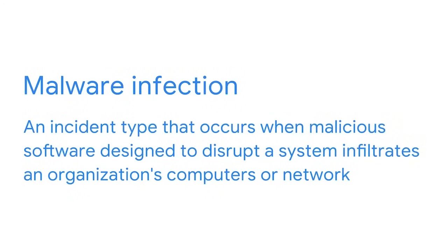Previously, we defined what it means to escalate an incident and discussed the skills needed to properly escalate incidents. In this video, we're going to cover a few incident classification types to be aware of: malware infection, unauthorized access, and improper usage. A malware infection is the incident type that occurs when malicious software designed to disrupt a system infiltrates an organization's computers or network. Malware infections can come in many forms — some are simple, and others are more complex.